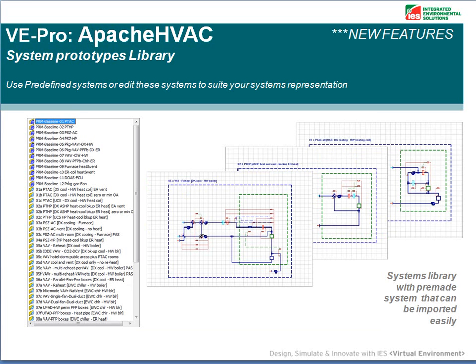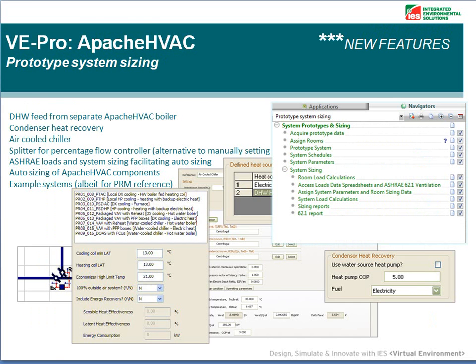We've put a lot of development over the last three years into Apache HVAC and its capabilities. One of the items we've introduced is the system prototypes library. The library contains pre-made systems that can be imported to your project, allowing you to choose a predefined system, import it, and then edit it to represent your real building systems easily. We've also introduced the system prototypes and sizing workflow navigator tool, which walks you through the process of Apache system setup and sizing, sizing your Apache HVAC networks automatically.